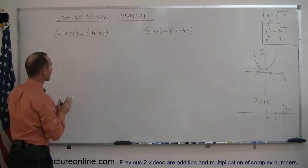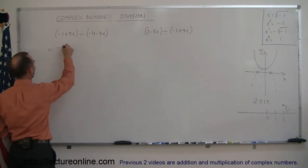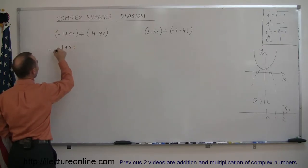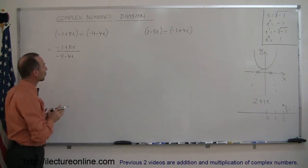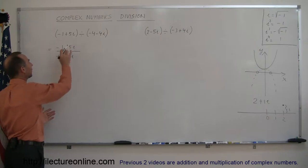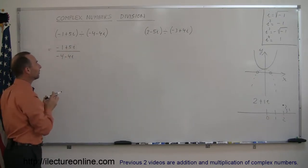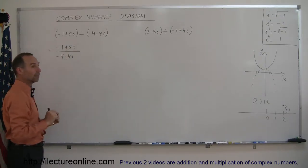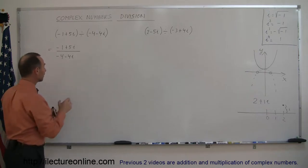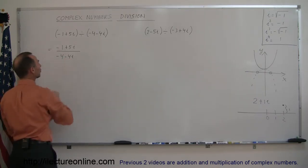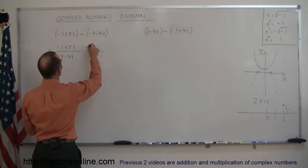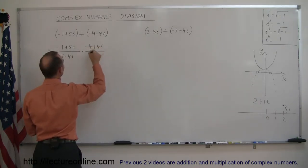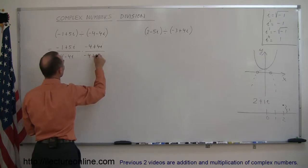First of all, you're going to write this actually as a fraction, so you can write this as minus 1 plus 5i divided by minus 4 minus 4i. Then what you're going to do is multiply both the numerator and denominator by the conjugate of the denominator. The conjugate is the same thing except the second term changes sign, so you're going to multiply by minus 4 plus 4i divided by minus 4 plus 4i.